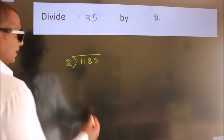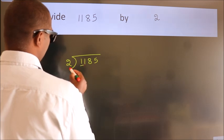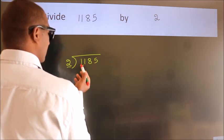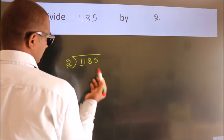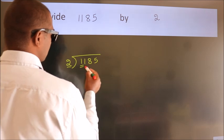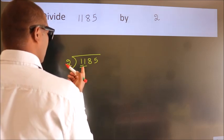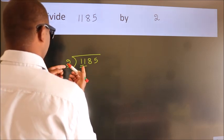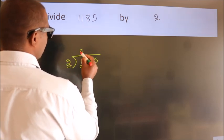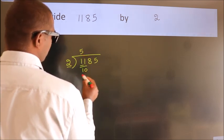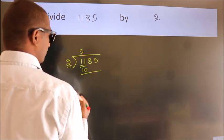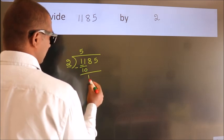Next, here we have 1, here 2. 1 smaller than 2. So we should take 2 numbers, 11. A number close to 11 in 2 table is 2 times 5 equals 10. Now we should subtract, we get 1.